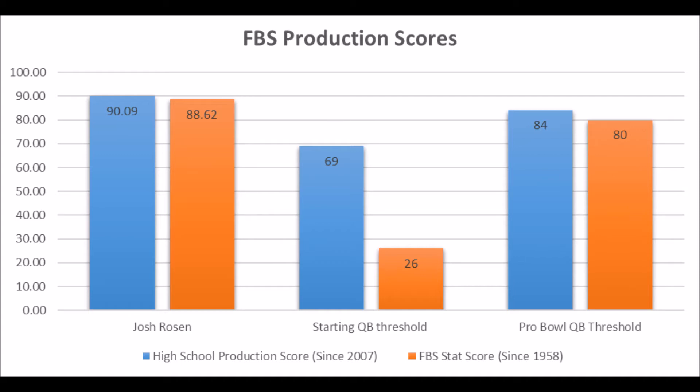On top of that, he has an 88.62 FBS production score, which hits the starting threshold and the Pro Bowl threshold as well. So in many ways, Josh Rosen, just based on his best single-season performances, looks a lot like a multiple Pro Bowl quarterback at the NFL level, at least based on the initial data work that I have done.